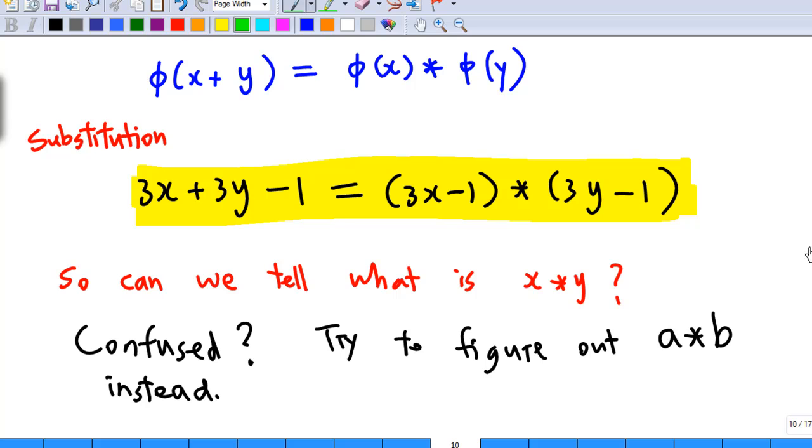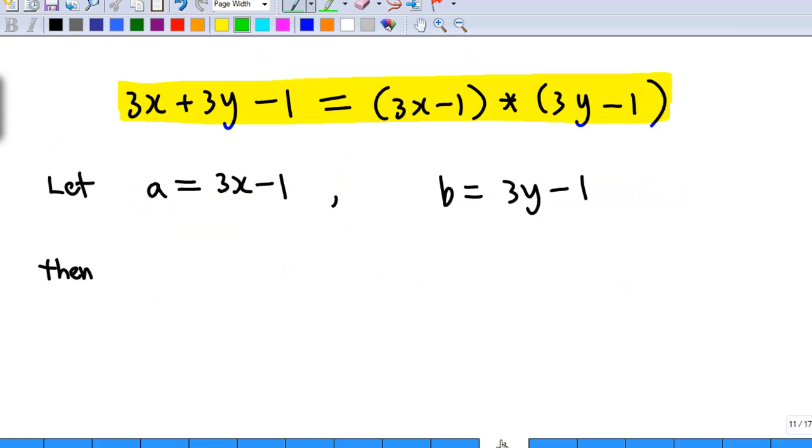If you find that a bit confusing, let's try to figure out a star b instead. The strategy is I'm going to call 3x minus 1 equal to a and 3y minus 1 equal to b.